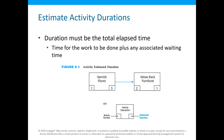So, activity durations. For each individual activity, we really are going to think about it this way. We made our box, and it's still not changed. On the left is our activity number — that's always going to be there and it's unique for that activity. On the right is our estimated duration. So now we're starting to fill in that box and get more information as we start putting details in there.